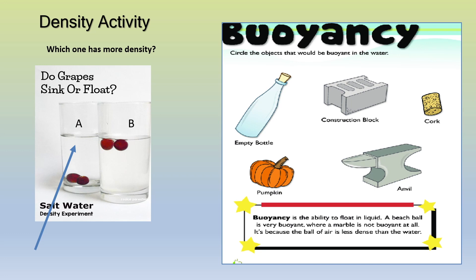It's because the ball of air is less dense than the water. So out of the five objects that you see, you will have to circle just three of them for me. Let's look at this video. Yes — the empty bottle is buoyant in the water. The pumpkin is also buoyant in the water. And the clock is also buoyant in the water. Very good.